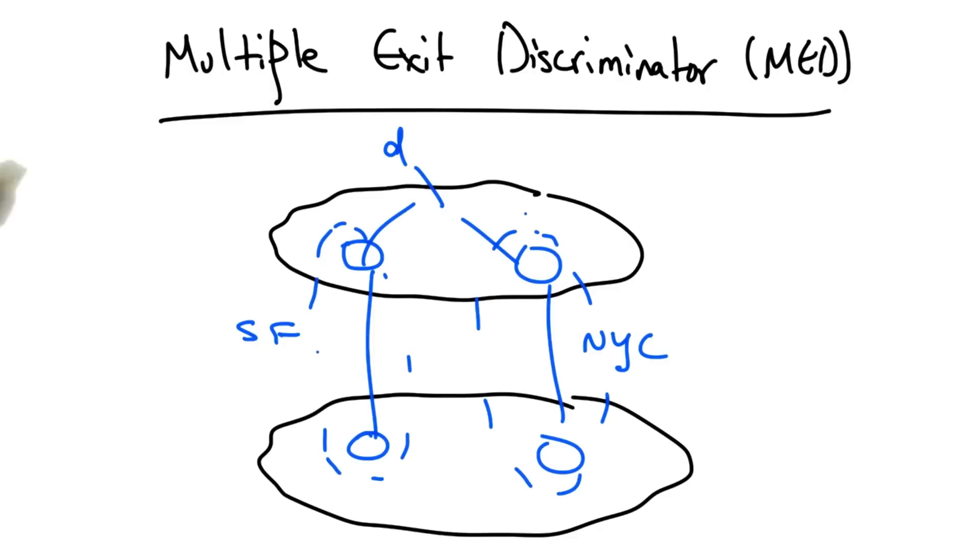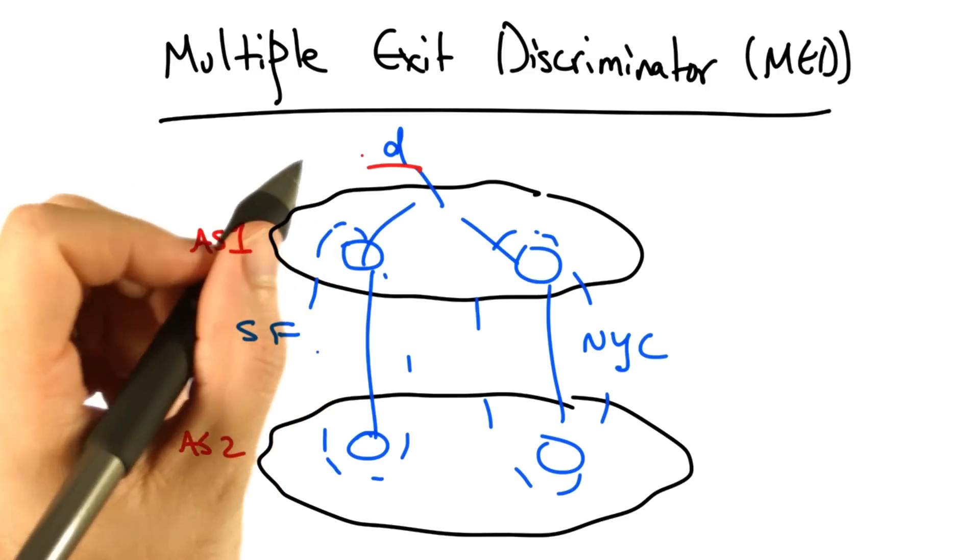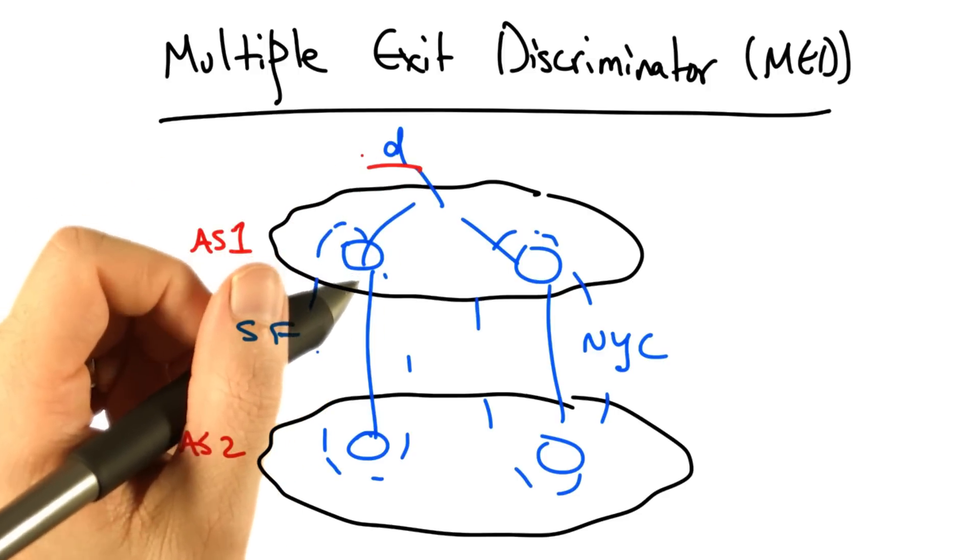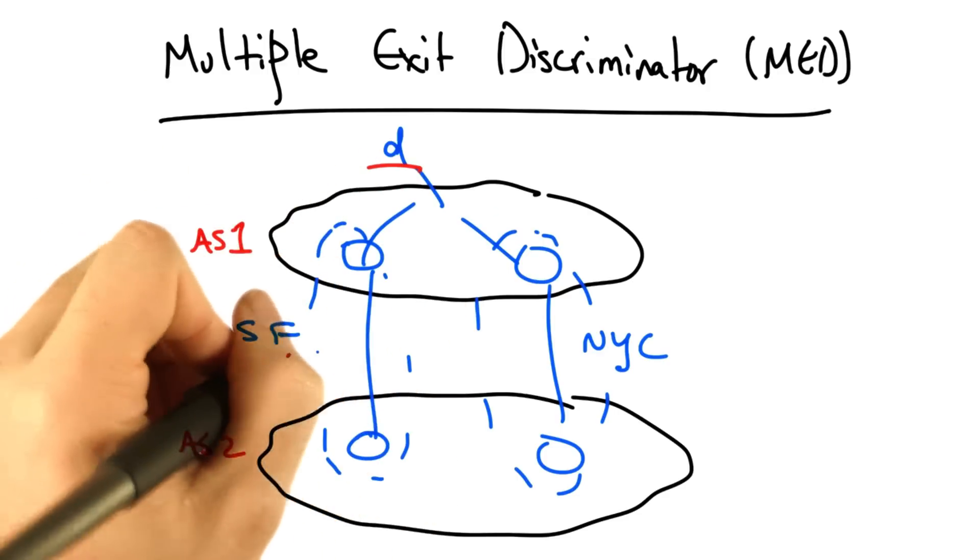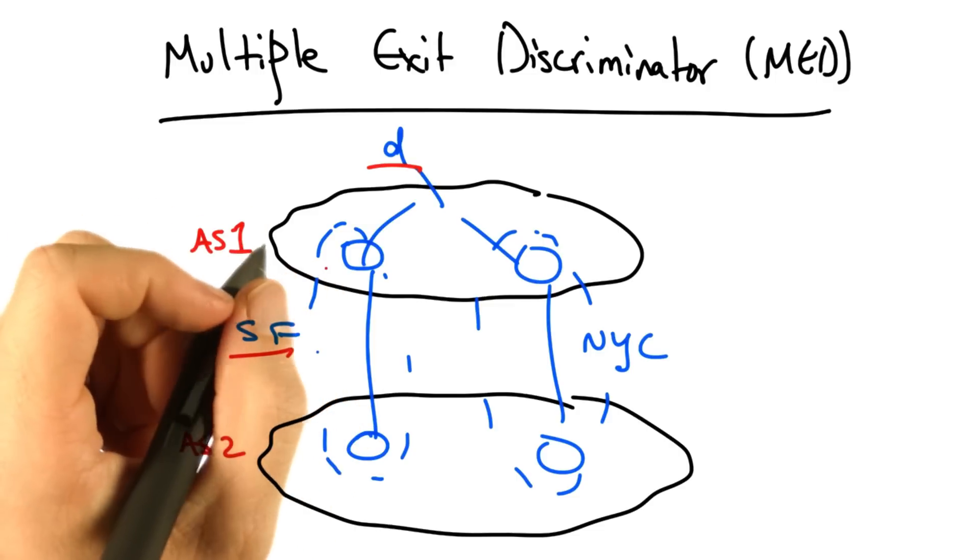Suppose two autonomous systems connect in two different cities, San Francisco and New York. Further suppose that AS1 wants traffic to destination D to enter via New York City rather than via the peering link in San Francisco.